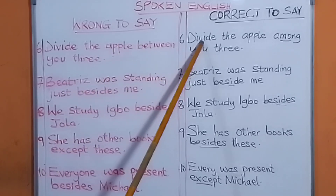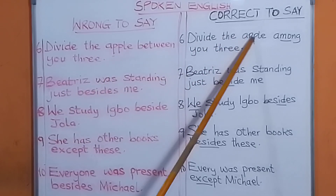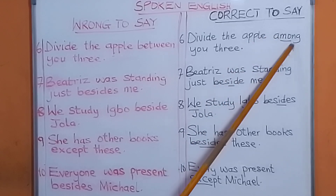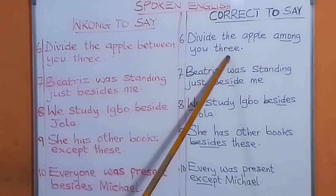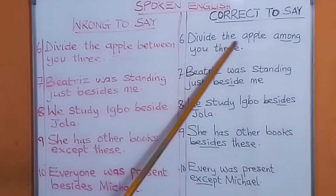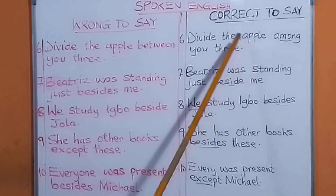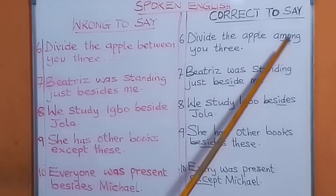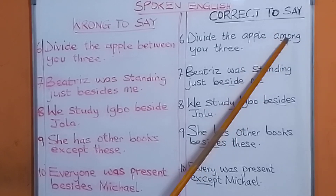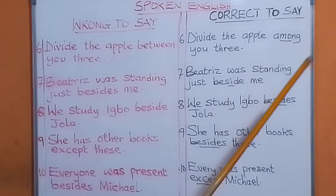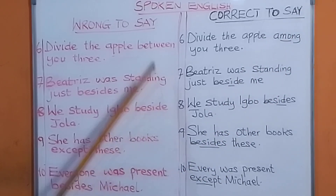The correct way to say that is 'divide the apple among you three.' Divide the apple among you ten, among you eight, among you nine — 'among' for more than two, 'between' only for two.